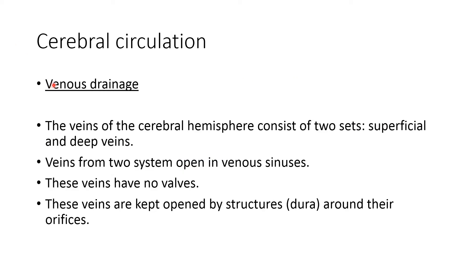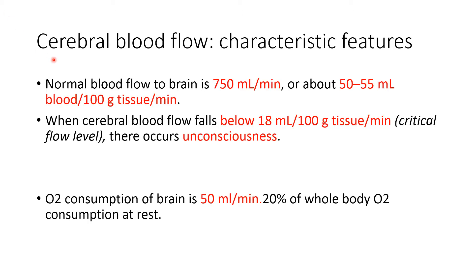Venous drainage in the cerebral circulation is by the veins of the cerebral hemisphere, which consist of two sets: superficial veins and deep veins. These anastomose with each other and drain into the venous sinuses, from which blood drains into the internal jugular vein. The cerebral veins have no valves and are kept open by the surrounding dura.